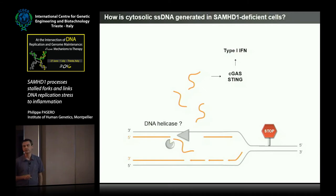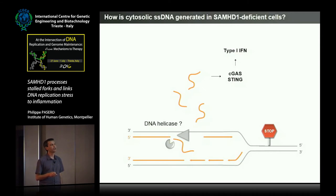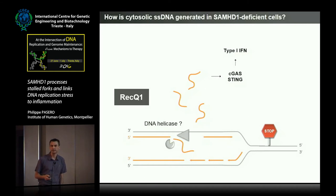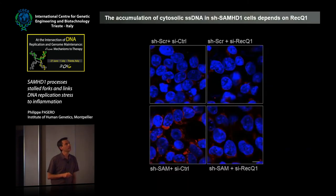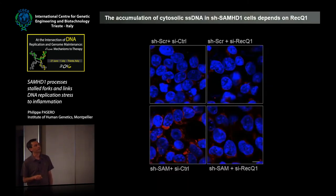We then asked how this DNA could be generated when SAMHD1 is not there. We reasoned that if it's displaced from the fork, there might be some helicase involved, and an obvious candidate is RECQ1 because we know it's acting at stalled replication forks. What we did was deplete RECQ1 and see whether we would suppress this cytosolic DNA. Indeed, that is the case. In SAMHD1-depleted cells, if we treat with siRNA against RECQ1, we largely reduce the amount of cytosolic DNA in the cells, and there is no effect of RECQ1 depletion alone.